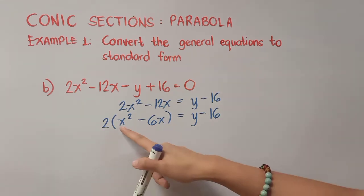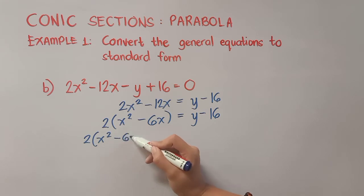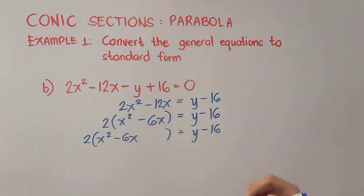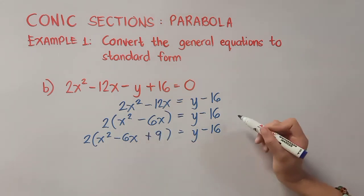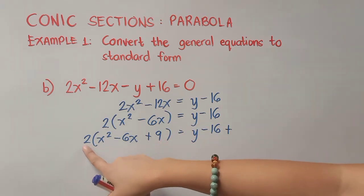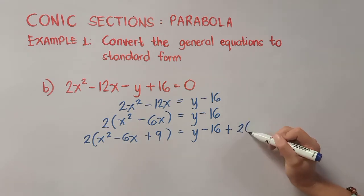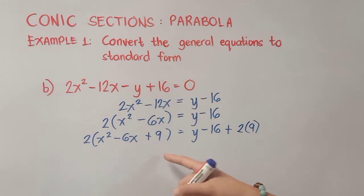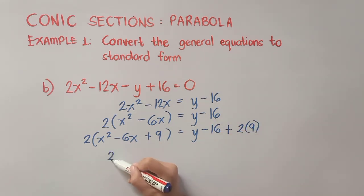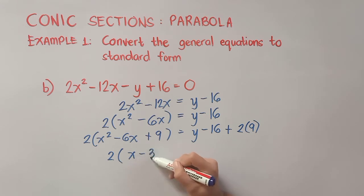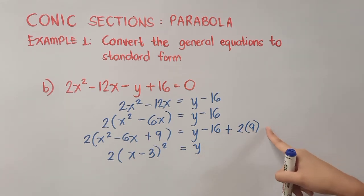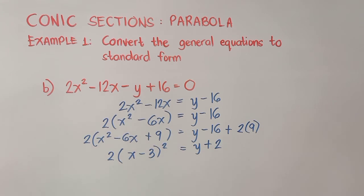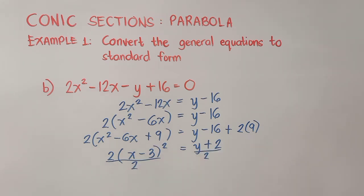We can now complete the square. We focus on our middle term: negative 6 divided by 2 is negative 3, and negative 3 squared is positive 9. Remember, there is still a number outside, so we add 2 times 9 on the right side. We can now factor the left side: 2(x − 3)². On the right side, negative 16 plus 18 is positive 2. Dividing both sides by 2, our final answer is (x − 3)² = (y + 2)/2.